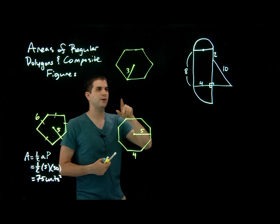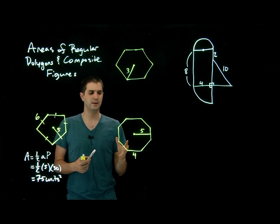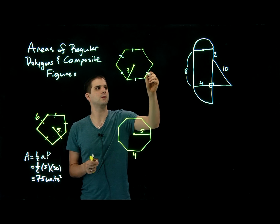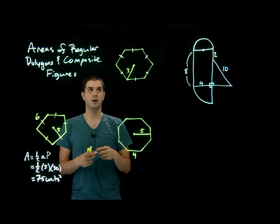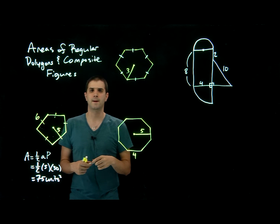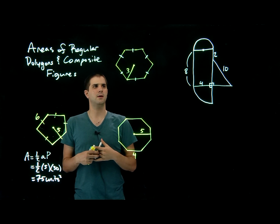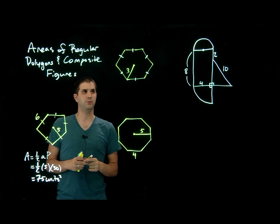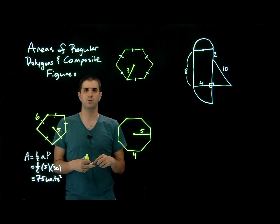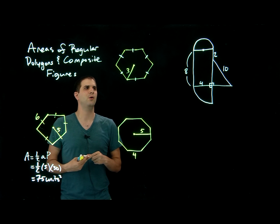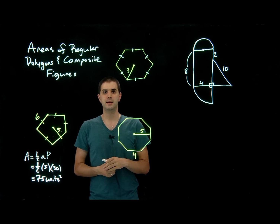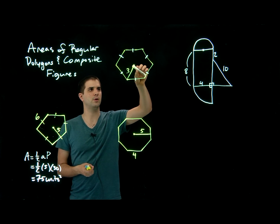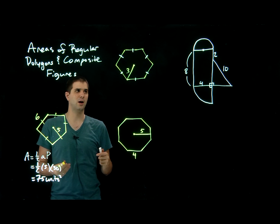Moving on to this example, we want to find the area of a regular hexagon. This has a little bit of a challenge — you might think we don't have enough information here. All we're given is a radius. So how, when the equation is one half AP, can we find the perimeter? We don't know the apothem either.